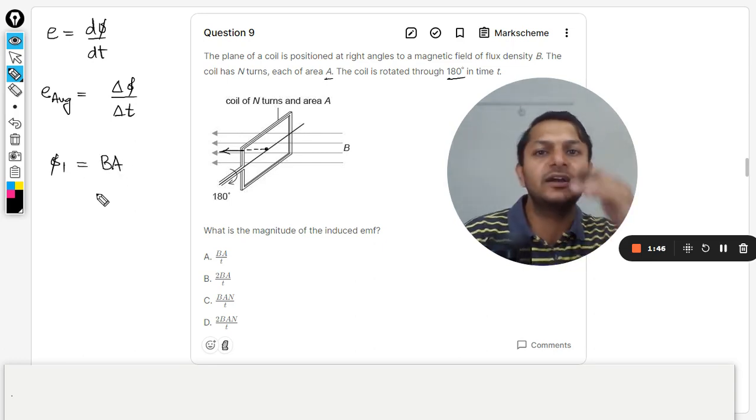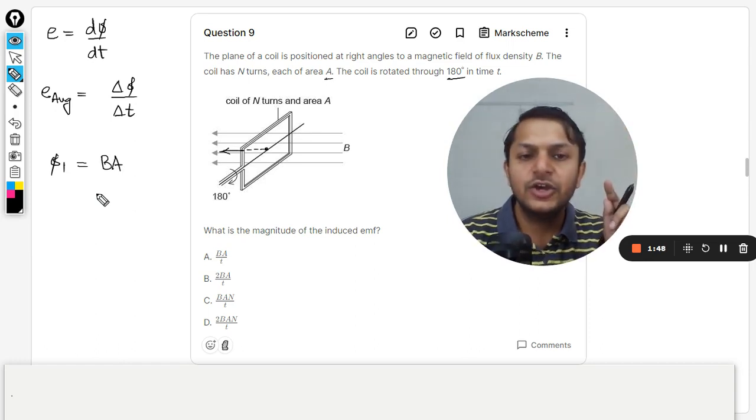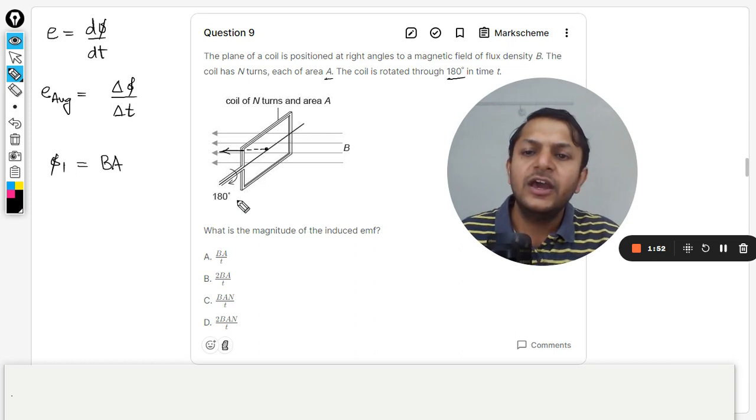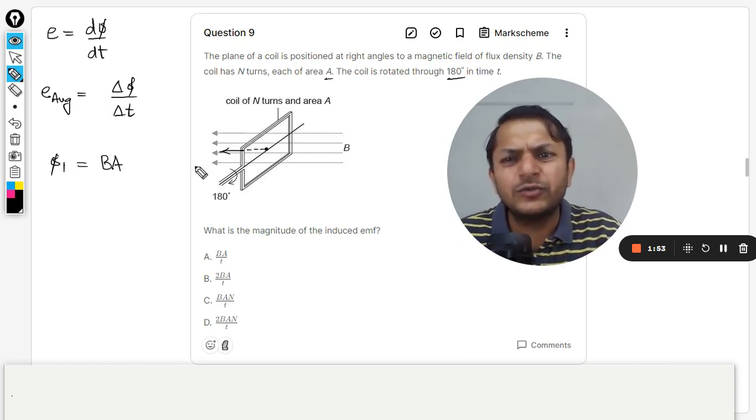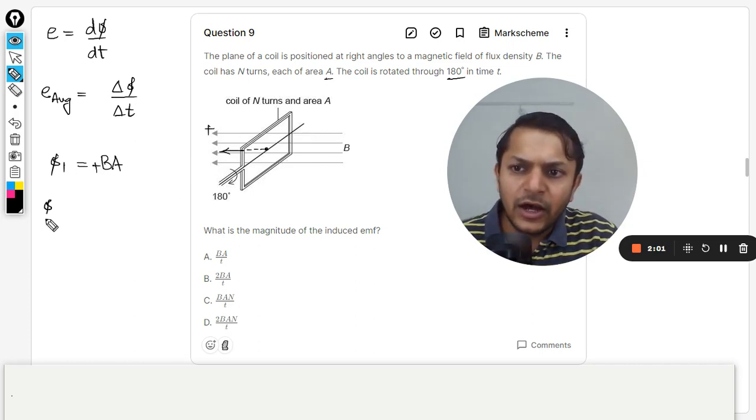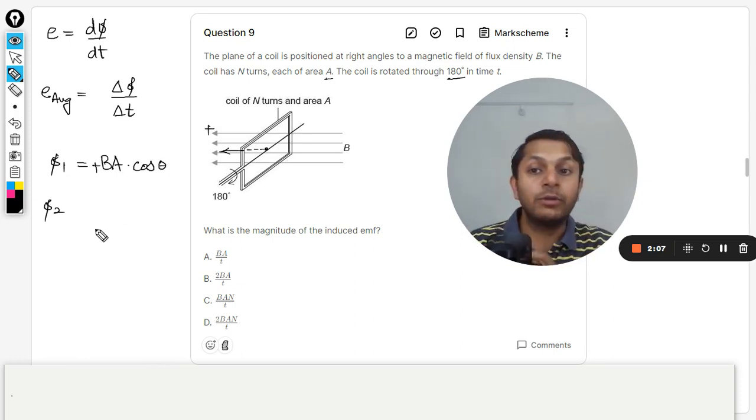So the flux can be taken as B into A. Now one side will be taken positive, another will be taken negative. So you can choose the right-hand side to be positive or left-hand side to be positive—anything. In this case, because the magnetic field is towards the left-hand side, I just take the left-hand side to be positive, so this side will be positive.